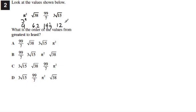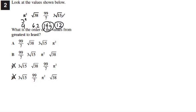So our four estimated values are 9, 6.2, 14 and 1 seventh, and 12. Greatest to least: the largest is 14 and 1 seventh, which is 99 sevenths — that's A or B, so C and D are eliminated. The next largest is 12, which is 3 times the square root of 15. So our answer is B, by the process of elimination.